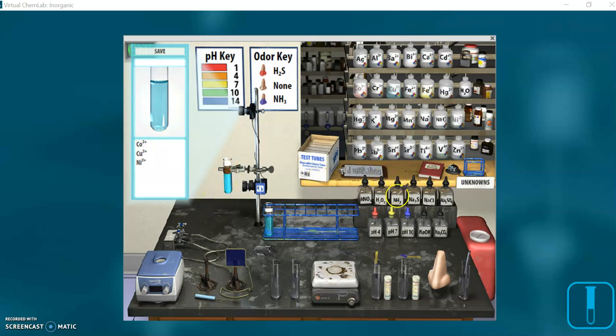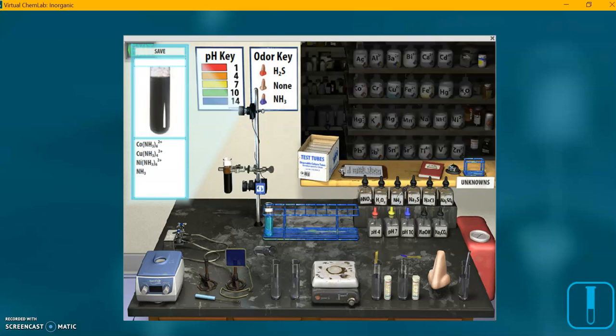I'm going to add some ammonia. You can see a little dropper appears there where the mouse is, and that automatically, when you click on it, adds it. I'm going to also add some sodium hydroxide. Now, you can see we've got precipitate forming in the solution. In fact, it even tells us what's going on there.